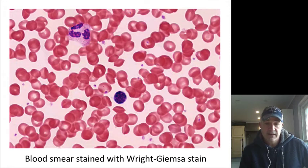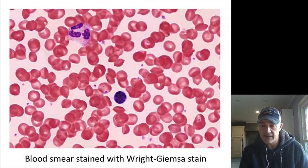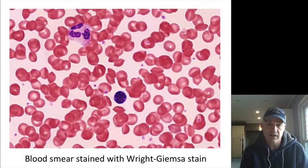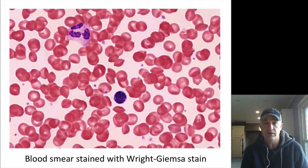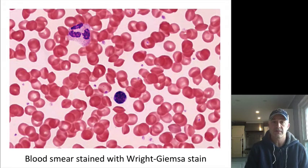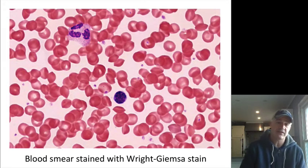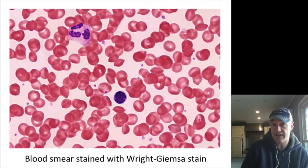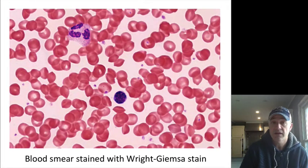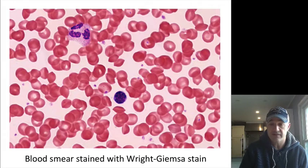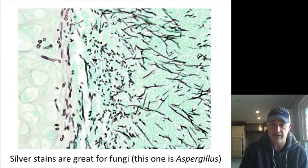Blood stains are Giemsa staining. You can see the red blood cells and the platelets — red blood cells are pretty obvious. A lot of times you don't need to stain red blood cells to see those, but for white blood cells, to see the nuclei, you will do this Giemsa staining.